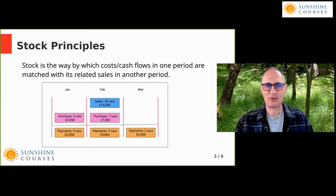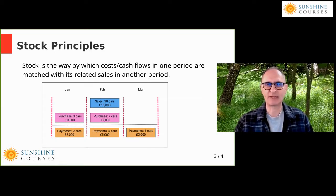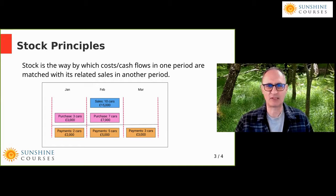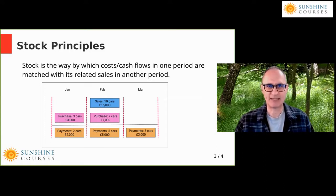Then in February we sell 10 cars. Because we bought three in January, we've only got to buy another seven in the month. As it turns out, we only pay for five cars, because we managed to delay payment for the other three cars till March. So if you look at the whole period, our revenues relate to 10 cars, our purchases relate to 10 cars in January and February, and our payments relate to 10 cars in January, February and March.